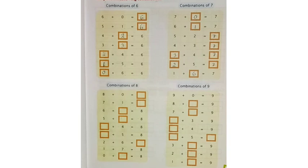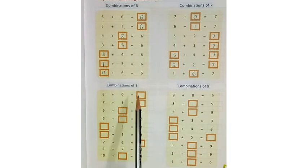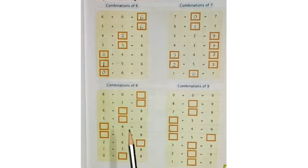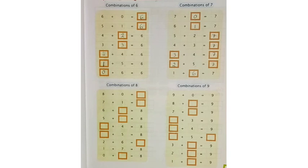Now, children, there are 2 more combinations: combination of 8 and combination of 9. You can try these — it is very easy, children. And not only this, you can try for other numbers also. Try for combinations of 10 and 11 also, children. It is a very playful method.